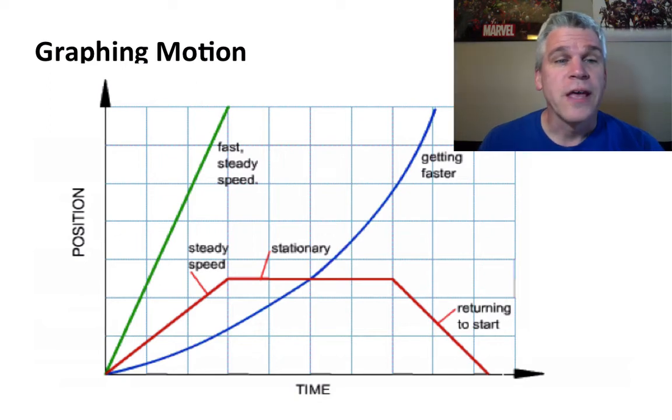So for instance, the green line, the person is walking pretty fast and with a steady speed, so that we have a nice straight line and it's going up at a particular angle.